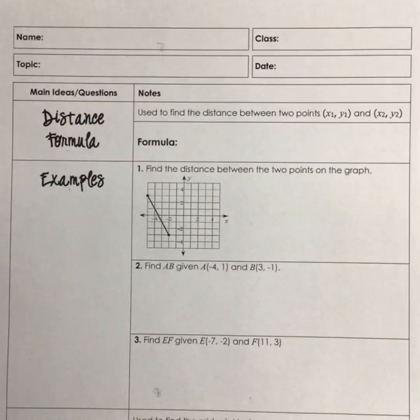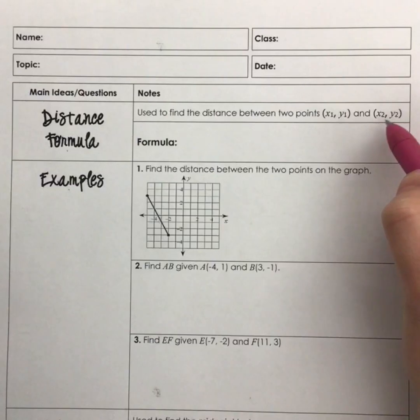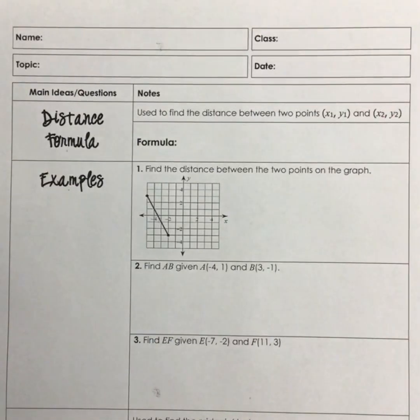So for our distance formula, we use the distance formula to find the distance between two points and we'll label them x₁, y₁, x₂, y₂, just like when we were trying to find slope before.